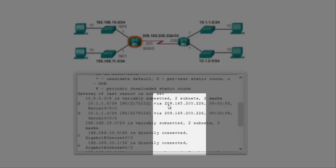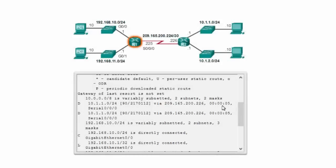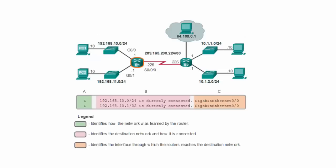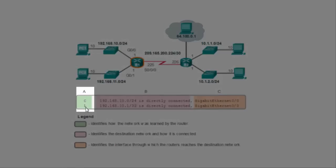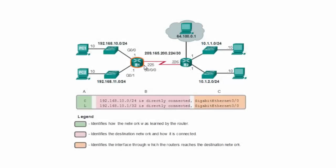The routing table also includes the gateway or exit interface that the router will use to send packets. In detail, there is a column which identifies how the network was actually learned. If it shows 'C', this means it's directly connected, which means the router will by default include all directly connected networks once it starts and activates its interfaces. It will automatically detect that these networks are directly connected to it.